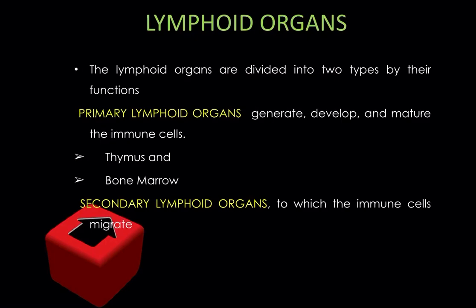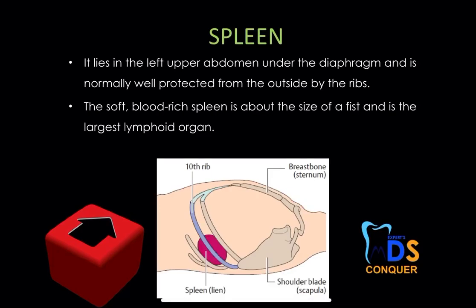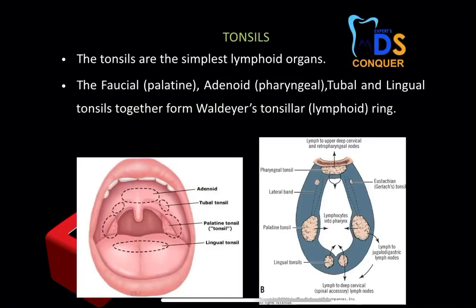The primary lymphoid organs are the thymus and the bone marrow. The thymus is behind the sternum and is especially well developed in newborns and growing children. Its surface is divided into many lobes. You can draw a diagram of the thymus if you wish. The spleen is another lymphoid organ and is one of the largest lymphoid organs. This covers the basic anatomy related to the lymphatic system.